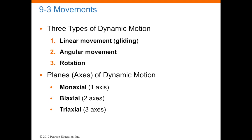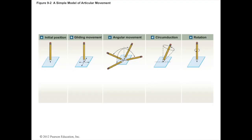There are three types of dynamic motion. You have linear movement, which is gliding; angular movement, which is when the top of the joint angles to different positions; and rotation, when the actual joint is stable but just rotates in a circle. There are also three different axes of dynamic motion. From left to right you can see these initial, gliding, angular, circumduction, and rotating movements.